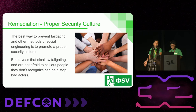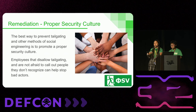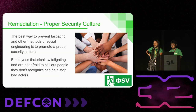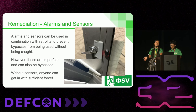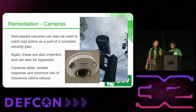It's really important to foster a proper security culture within your company. Tailgating and other methods of social engineering are often the easiest way to get into a secure space. Employees who disallow tailgating or challenge people they don't recognize — asking who they are, do they work there, can they prove it — can help stop bad actors. Alarms and sensors are very important and can be used in combination with retrofits to prevent bypasses and catch people in the middle of using them. Without sensors, cameras, or detection, anyone can get in with sufficient force and time.